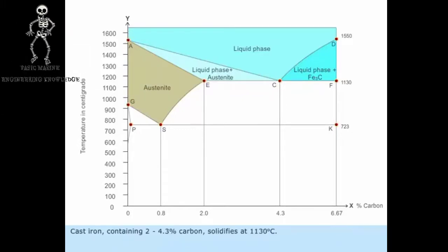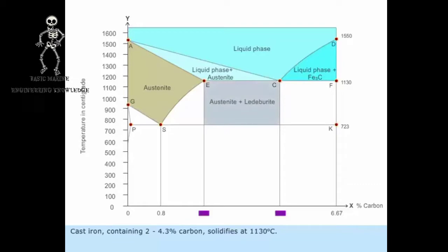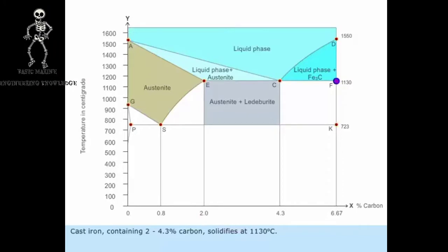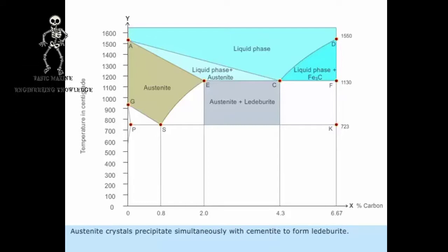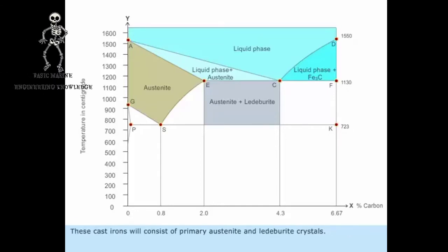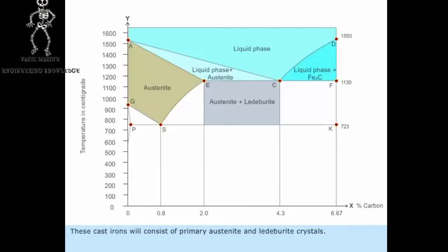Cast iron containing 2 to 4.3 percentage carbon solidifies at 1130 degrees centigrade. Austenite crystals precipitate simultaneously with cementite to form ledeburite. These cast irons will consist of primary austenite and ledeburite crystals.